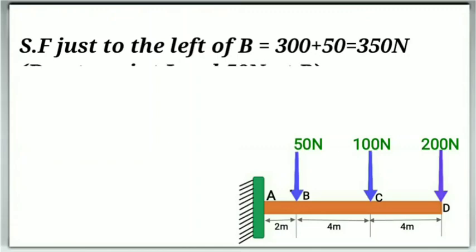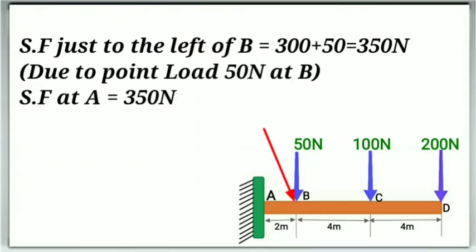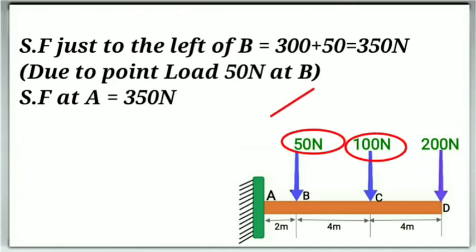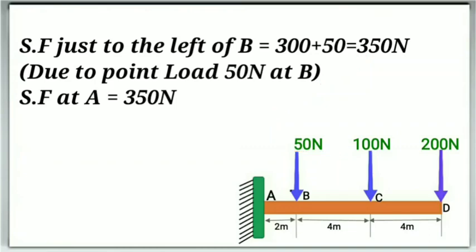Shear force just to the left of point B will be equal to the summation of all the forces in the right portion of this point, which will be equal to 200N plus 100N plus 50N equal to 350N in total. And shear force at point A will also be equal to 350N because shear force will remain constant between point B and A due to absence of any other load.